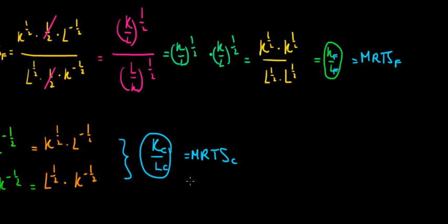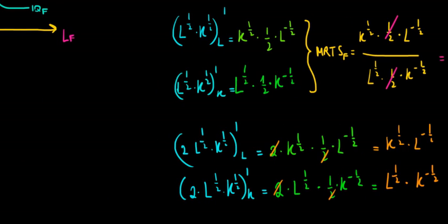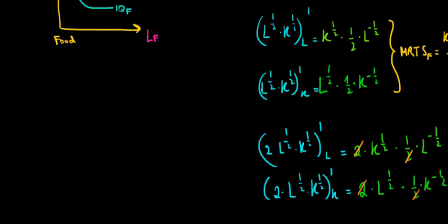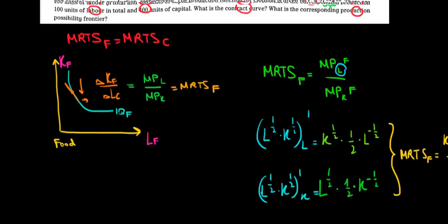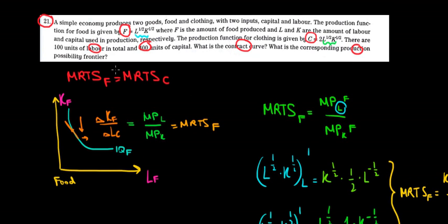This is where we stopped in the previous video. We found out the MRTS for clothing and food production. Now in this video, let's see how this relates to the fact that we have a limited amount of capital and labor — namely, we have 100 units of labor and 400 units of capital in the entire economy for the production of clothing and food.